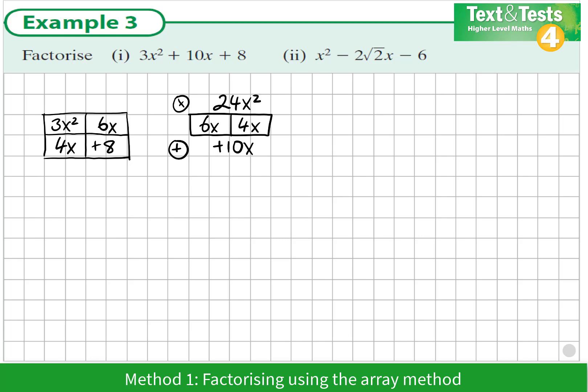We place the 6x and the 4x in either of the boxes. We get the highest common factor of the 3x² and the 6x. That would be 3x. 3x times x is 3x². x times 4 will give us 4x. And 2 times 4 will give us 8. So these are the factors of the quadratic expression: (x + 2)(3x + 4).